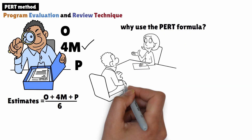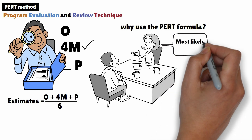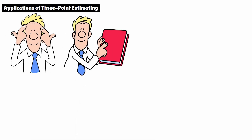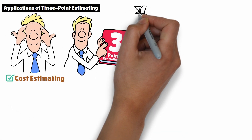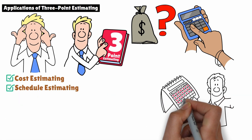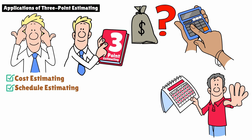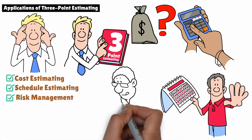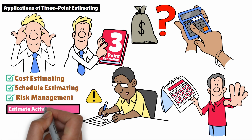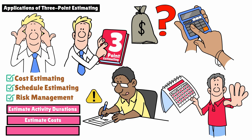So why use the PERT formula? The PERT method is especially helpful when there's more confidence in the most likely scenario, but you still want to account for risk and uncertainty on either end. You can apply three-point estimating in various aspects of project management, such as cost estimating — when you need to estimate how much a project will cost while accounting for potential fluctuations in price or scope; schedule estimating — for estimating activity durations where there could be delays or faster-than-expected progress; and risk management — since this technique inherently considers uncertainty, it's great for managing risks. You'll typically use three-point estimating during processes like estimate activity durations, estimate costs, and estimate activity resources.